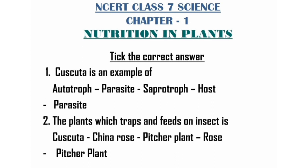We are halfway there. Let's move on to tick the correct answer. Number one: Cuscuta is an example of — options: autotroph, parasite, saprotroph, host. Cuscuta is an example of parasite. Number two: the plant which traps and feeds on insects — options: Cuscuta, china rose, pitcher plant, rose. The plant which traps and feeds on insects is pitcher plant.